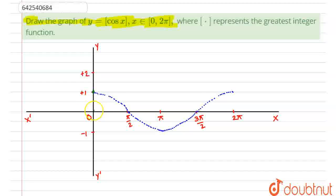After that, this should be an open point. And after that, all points are 0, because cos x is less than 1. So, box of less than 1 is 0. And for x equals π by 2, box of cos π by 2 is box of 0. So, that is again 0.